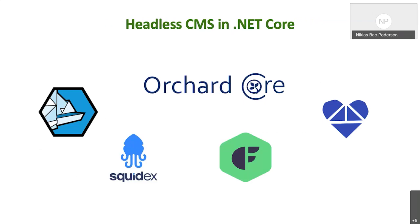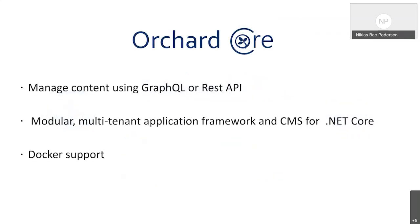Now, headless CMS in .NET Core. I won't be able to mention every headless or decoupled CMS in .NET Core — one, I don't have the time, and two, I don't know all of them — so let me briefly discuss some I have experience with or have heard great things about. First, Orchard Core: it can be deployed anywhere regardless of platform with container support, it manages content using GraphQL or REST API, and it is multi-tenant, meaning it offers reusable website templates allowing you to manage multiple sites with a single installation. There's also Docker support.